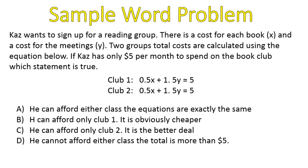So here are our options. A, he can afford either class. The equations are exactly the same. B, he can afford only club one. It's obviously cheaper. C, he can afford only club two. It's a better deal. Or D, he cannot afford either class because the total is more than $5. But you can see clearly here that the total is exactly $5 for both clubs. Both clubs are the same cost, and so he could afford both of them. So recognizing that these are the same cost is part of looking at an equation and understanding what it means. So some sample word problems with linear equations might look like this. I wanted to prepare you for seeing stuff like this in the future and being able to recognize whether they're exactly the same, whether they're different so that they will never have an intersection, or whether you need to solve them algebraically and find the point where they intersect.